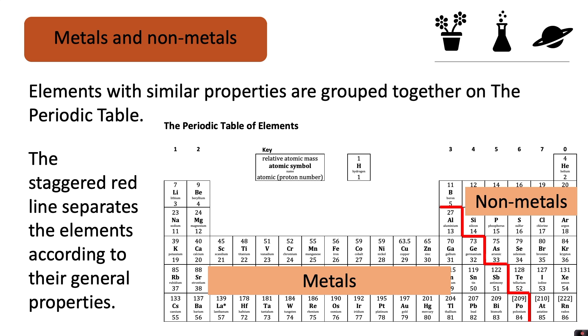The staggered red line separates the elements according to their general properties, with metals on the left of the red line and non-metals to the right.